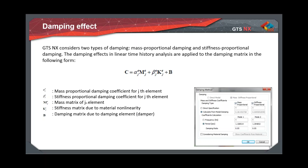GTS and X considers two types of damping: mass proportional and stiffness proportional damping. When defining analysis control, we calculate Rayleigh coefficients based on the periods of the two prevalent vibration modes, obtained from a prior eigenvalue analysis. We'll apply a 5% damping ratio.